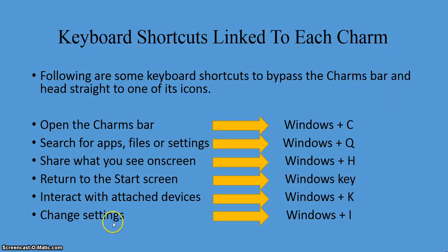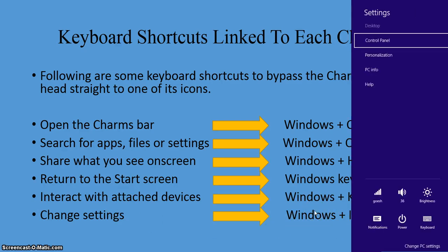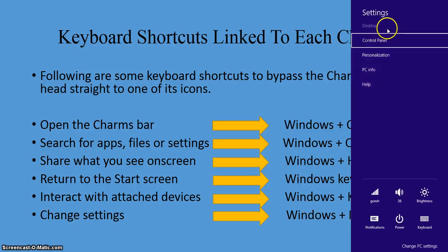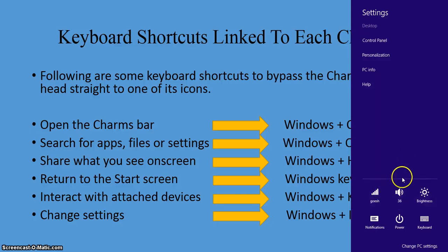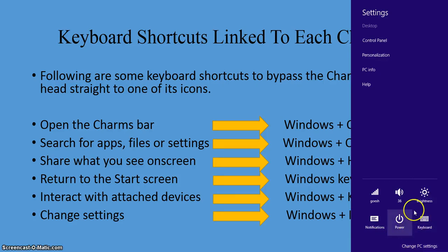To change your settings, press the Windows key plus the letter I — and this is how you activate changing your settings. This shows your internet connection, volume, brightness, notifications, power, and keyboard. If you want to change more than what's here, just click 'Change PC settings' and it'll take you to another screen.